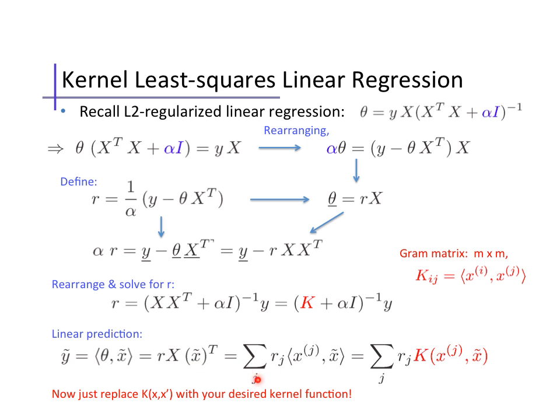Which is a sum over data points j of r_j times the dot product of data point j with x tilde. Or, a sum of r_k times the similarity between x_j and x tilde in this dot product form.